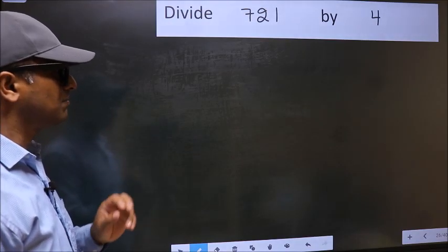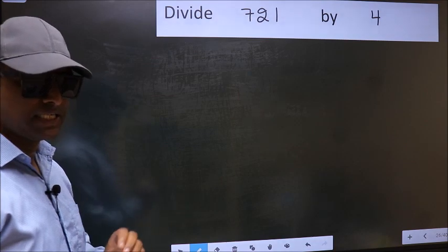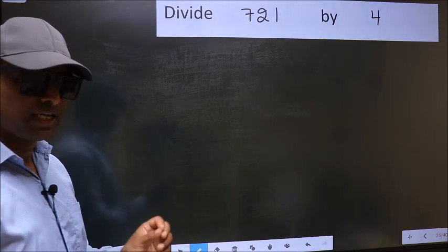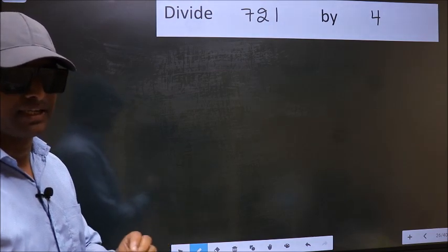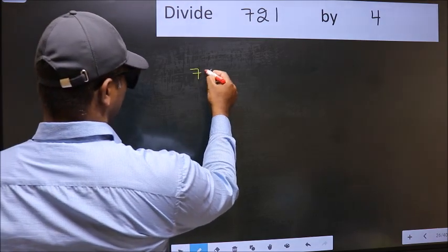Divide 721 by 4. While doing this division, many do this mistake. What is the mistake that they do? I will let you know, but before that we should frame it in this way: 721.